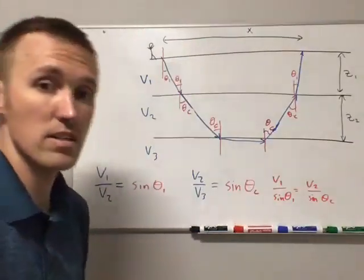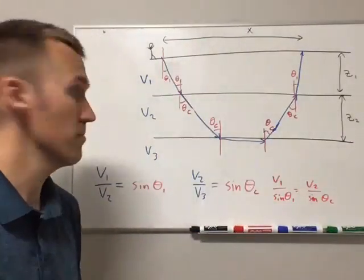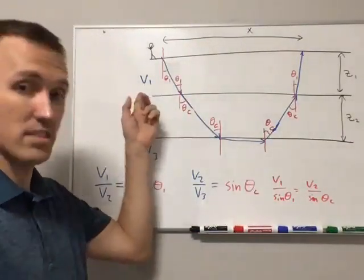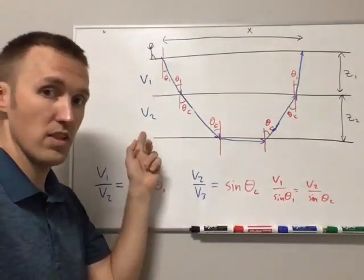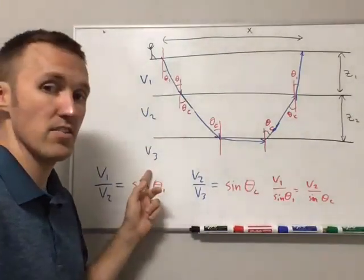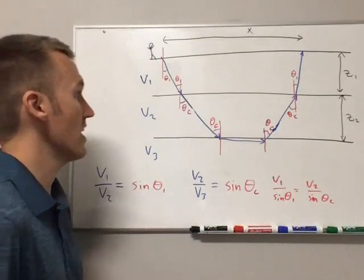Surface, again, where our source and sensors are, and then a low velocity layer, an intermediate velocity layer, and a higher velocity layer. So three velocity layers.